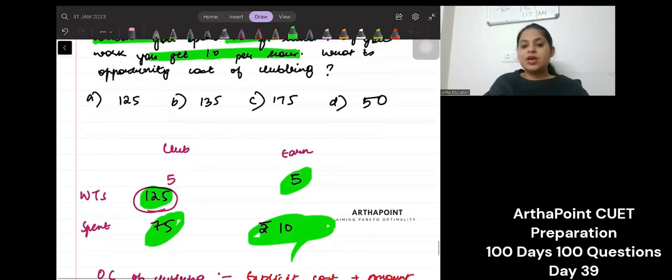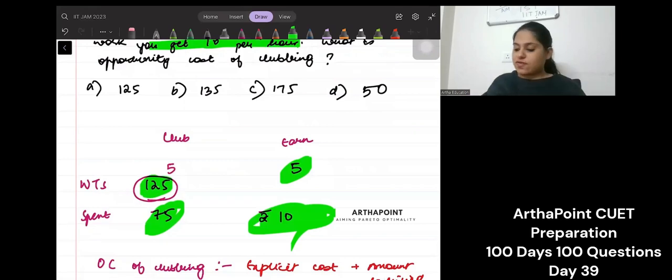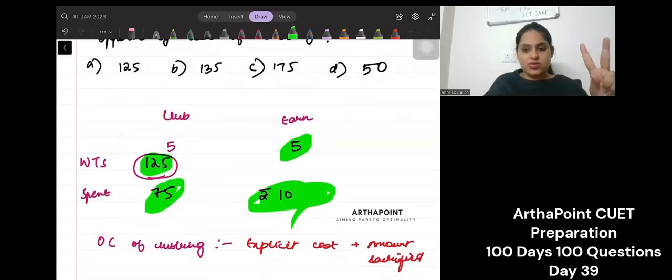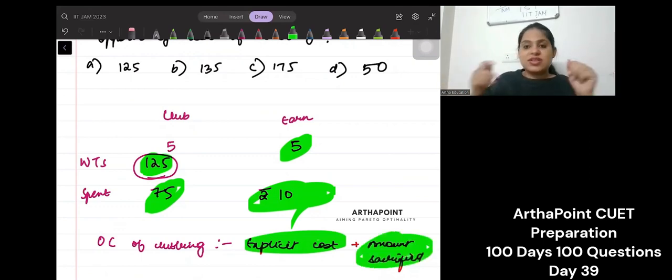What is the opportunity cost of clubbing? So I will just give you a hint here. The opportunity cost of clubbing comprises of two things. The explicit cost, that means the money you pay for clubbing. And the amount sacrificed, that means the money you could have earned, but you did not earn.